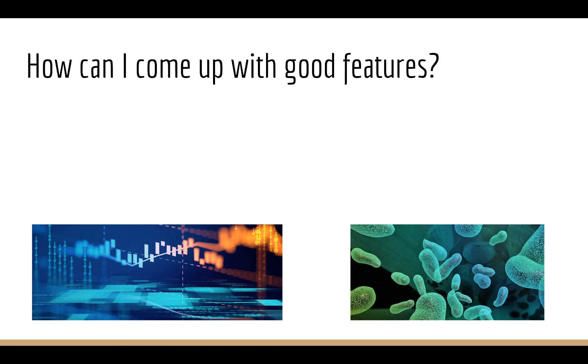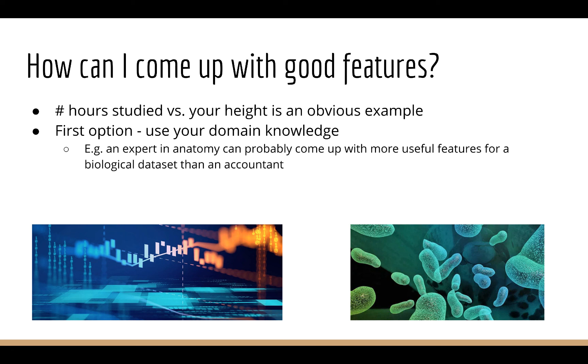So a lot of people ask me, in the real world, how can I come up with good features? And there are a variety of approaches you can take. One is not necessarily better than the other. But it's good to know what approaches are available to you, so you know what to try when you're working on your own machine learning project. The first one is very simple and what most people would consider obvious: using your domain knowledge. For example, an expert in, say, anatomy, is going to come up with better features for a biological dataset than, say, an accountant.